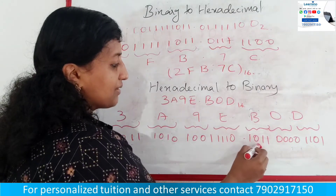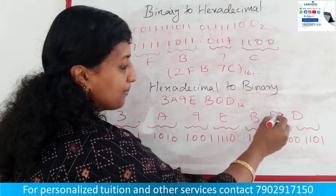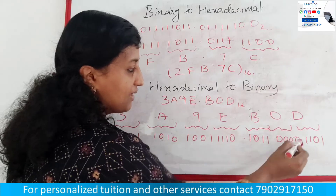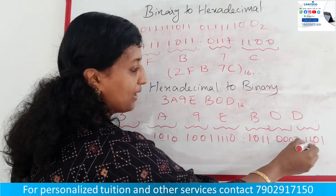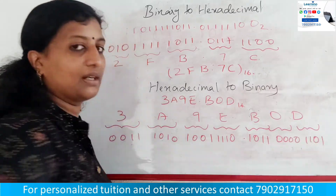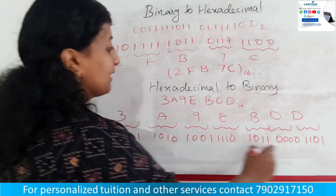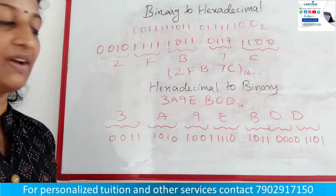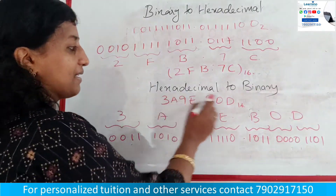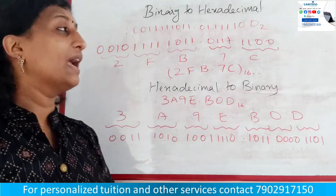For B, we have 0, 1, 1. For 0, we have 0000. For D, we have 1, 1, 0, 1. This is the corresponding binary value. This is the hexadecimal to binary conversion.